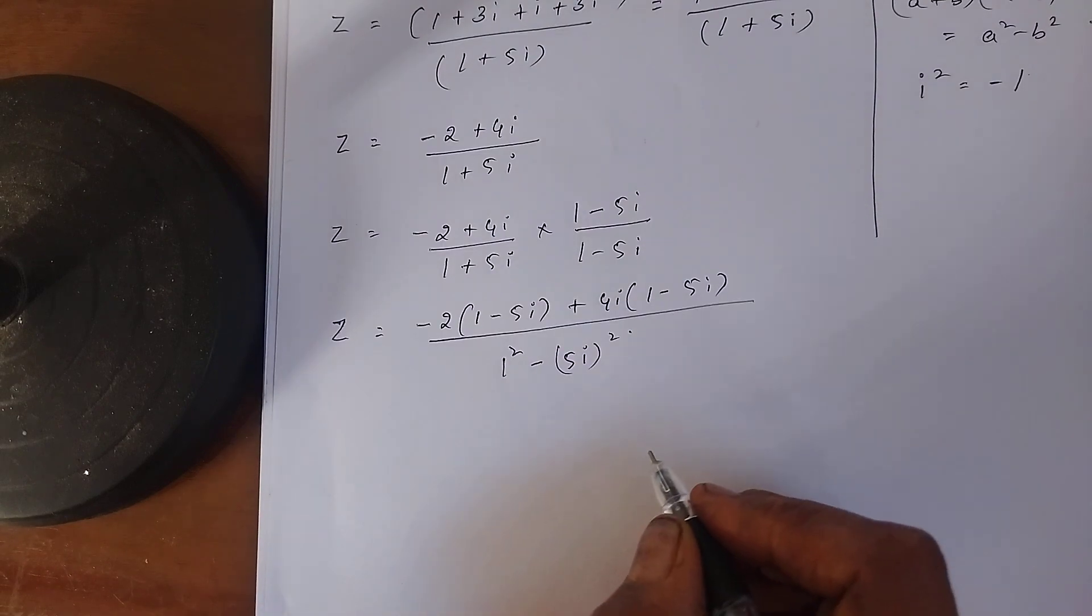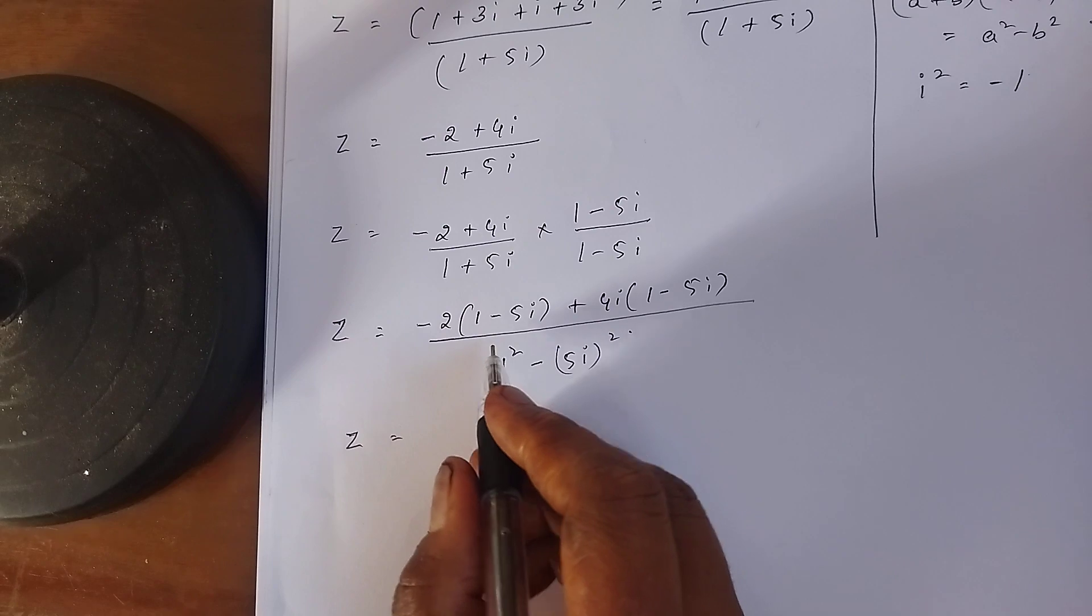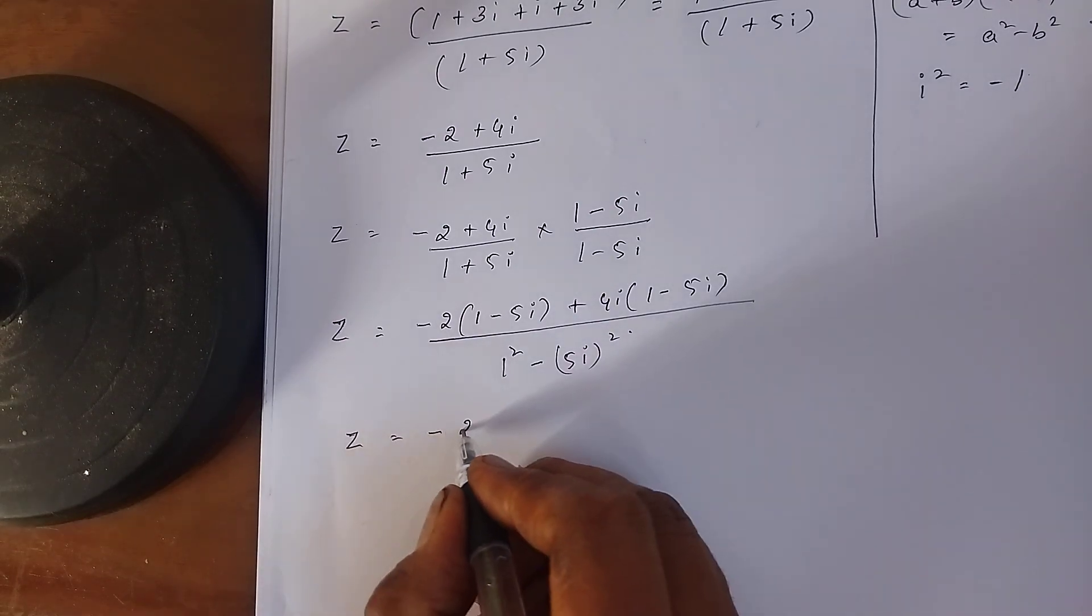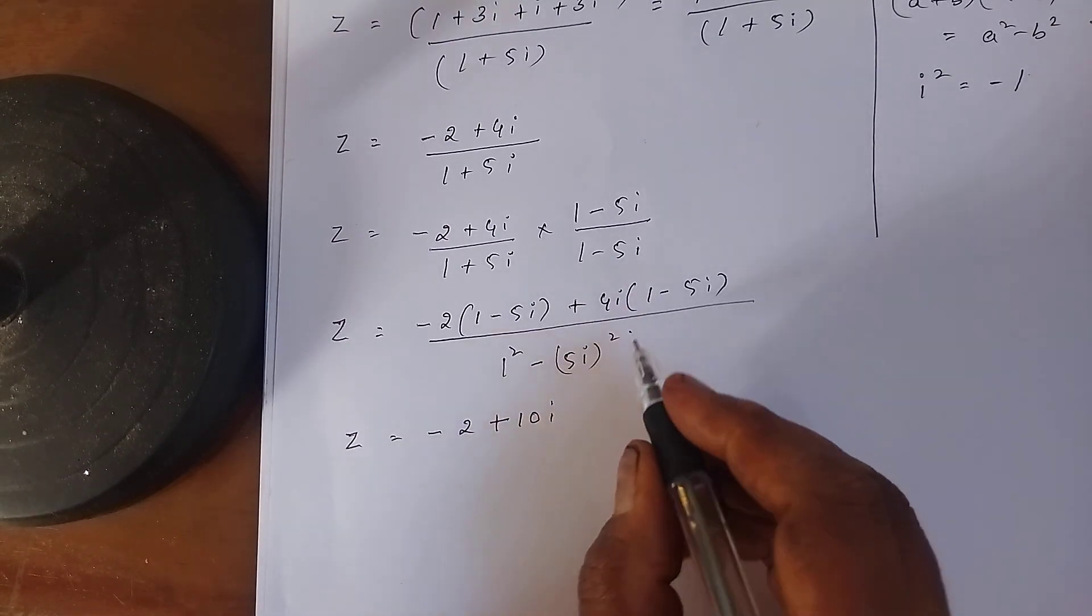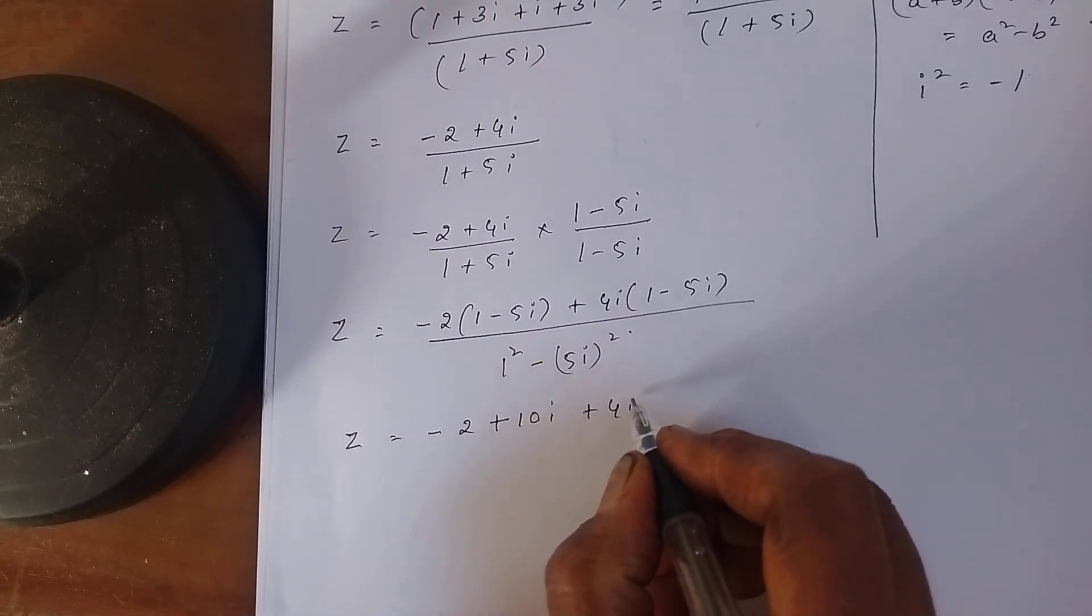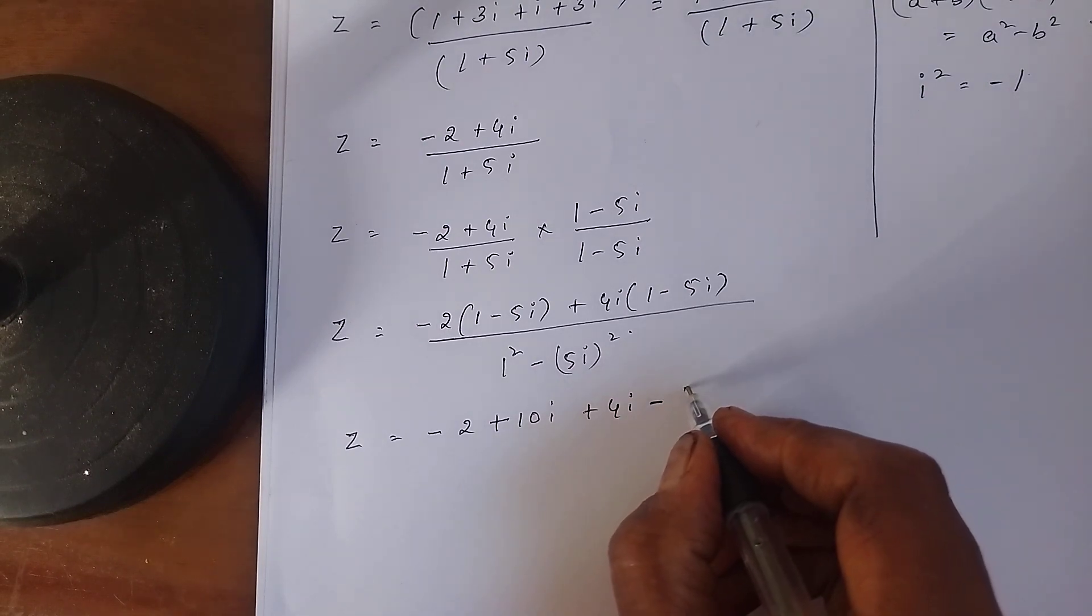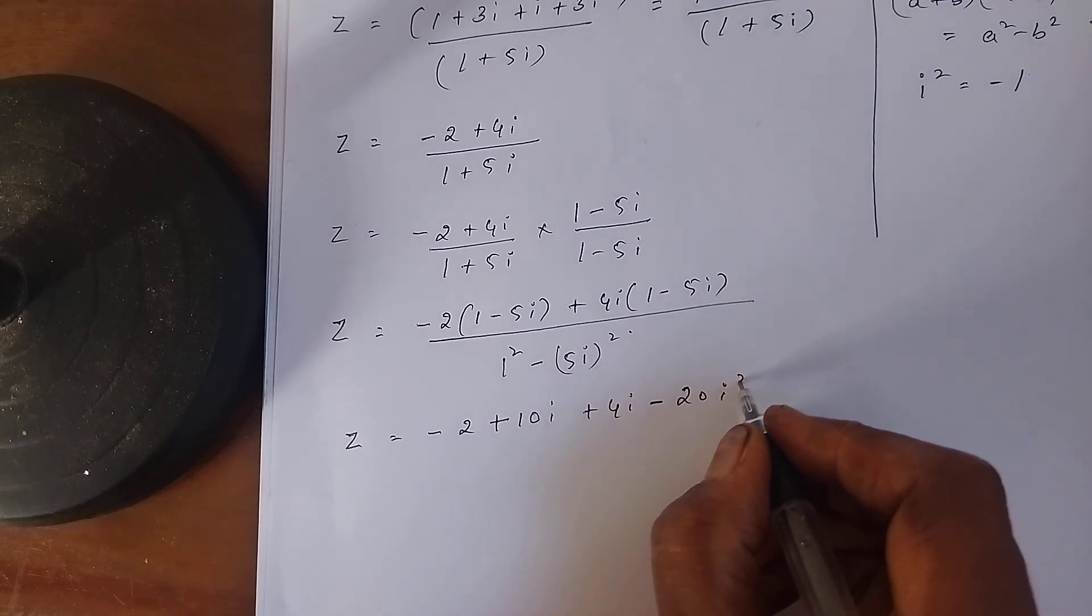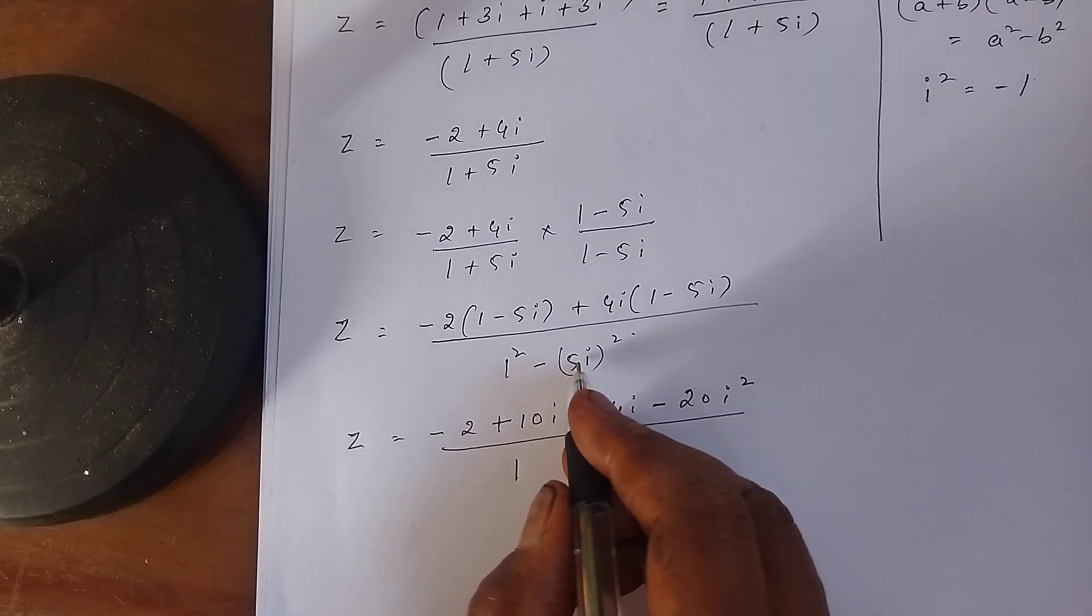Next, Z equals -2 into 1 is -2, minus into minus is plus 10i, plus into plus is plus 4i, plus into minus is minus 20i². Whole divided by 1² is 1.